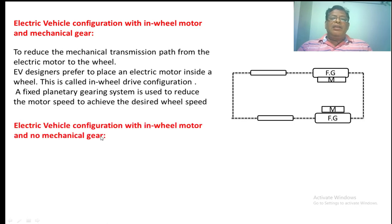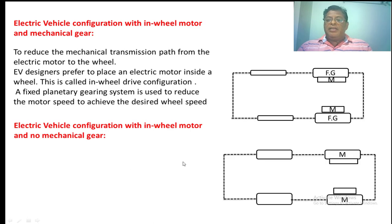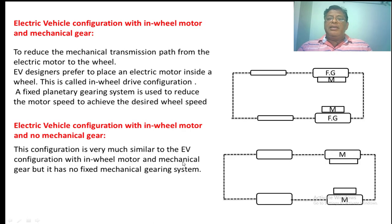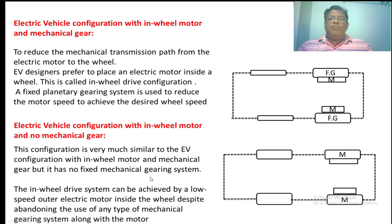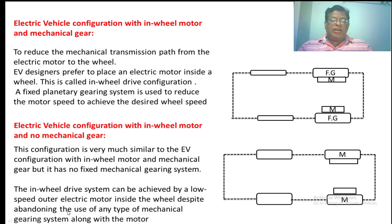The last configuration is the electric vehicle with an in-wheel motor and no mechanical gearing. In this case, the mechanical gearing is also eliminated. The motor is kept inside the wheel — it is almost the same as the in-wheel motor EV arrangement, but without any mechanical gearing. The in-wheel drive system is achieved using a low-speed outer electric motor inside the wheel, eliminating the use of any mechanical gearing system.